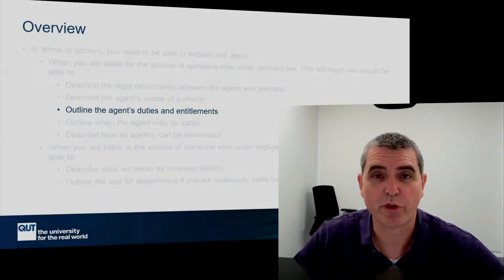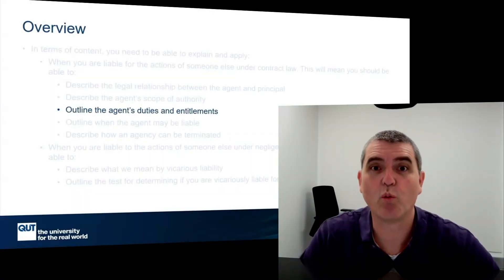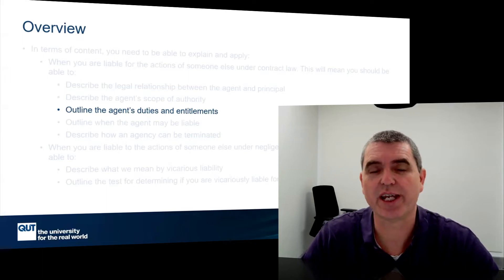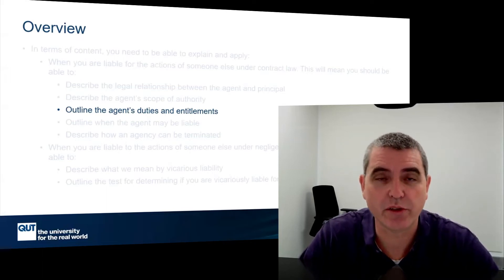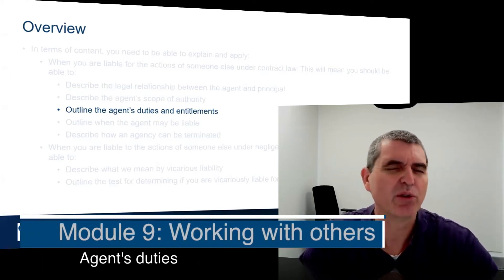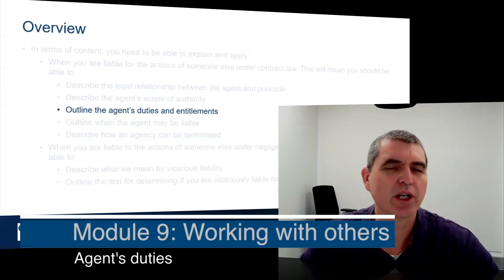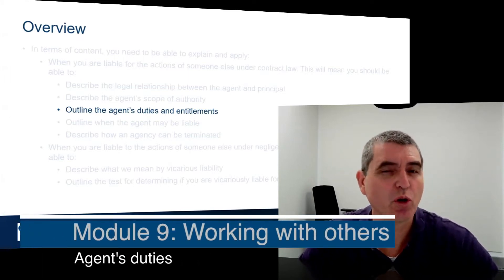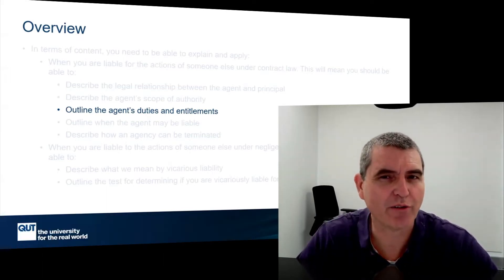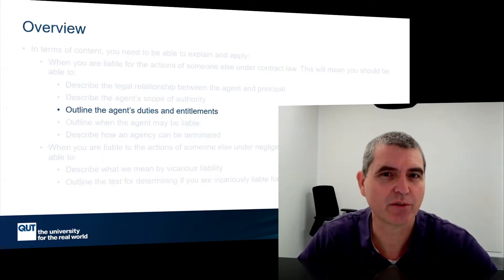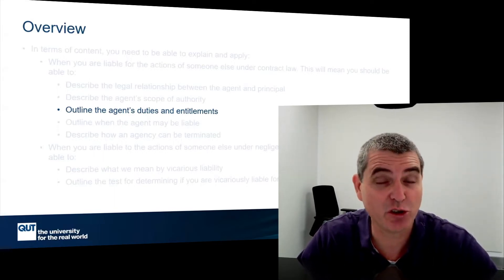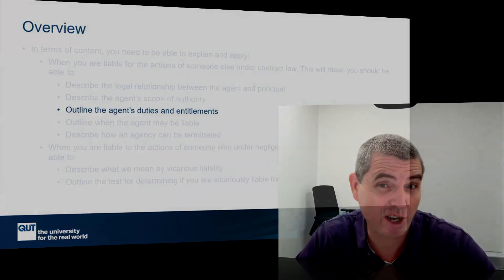Having looked at the scope of authority, or what the agent has authority to do, we've now got to look at what's required of the agent. That's what we're up to next in terms of the duties and entitlements of the agent.